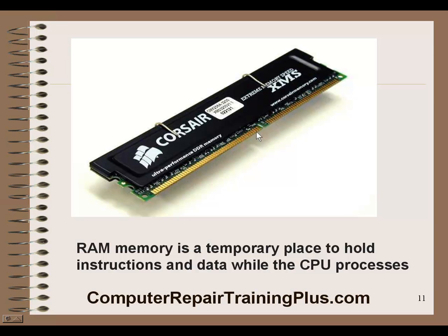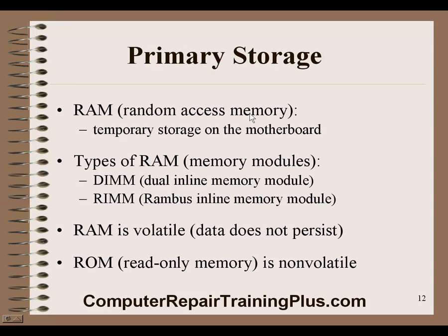You'll see there's a little slot on the DIMM. We have primarily DDR2 and DDR3 today. This slot is positioned so that when you plug the RAM into the motherboard slot, it can only go in one way. RAM — Random Access Memory — is temporary storage on the motherboard; when the power goes down, this memory goes away. Types of RAM include DIMMs and Rambus inline memory modules, though DIMMs are pretty much taking over the market. RAM is volatile, meaning data does not persist when power is removed.